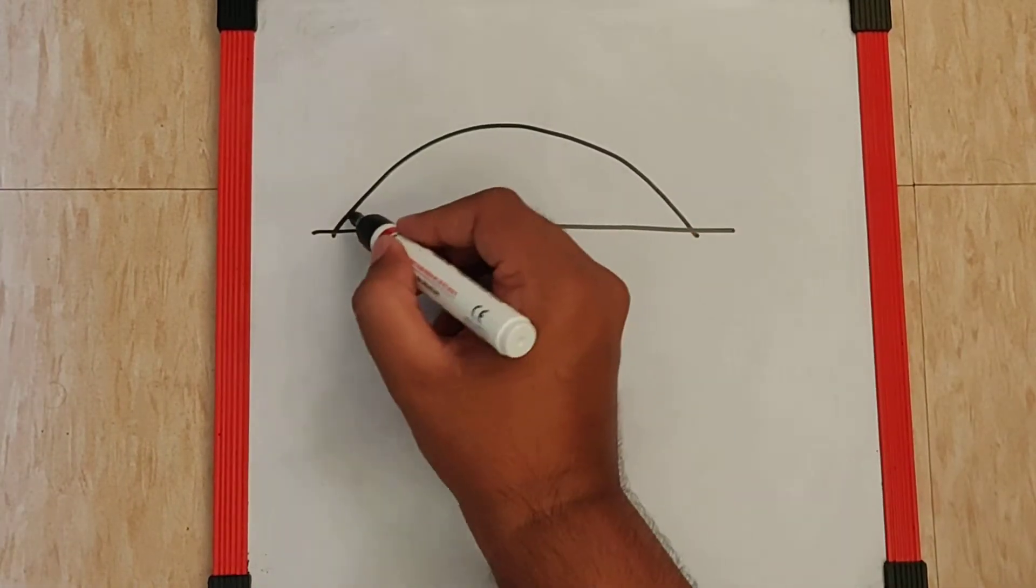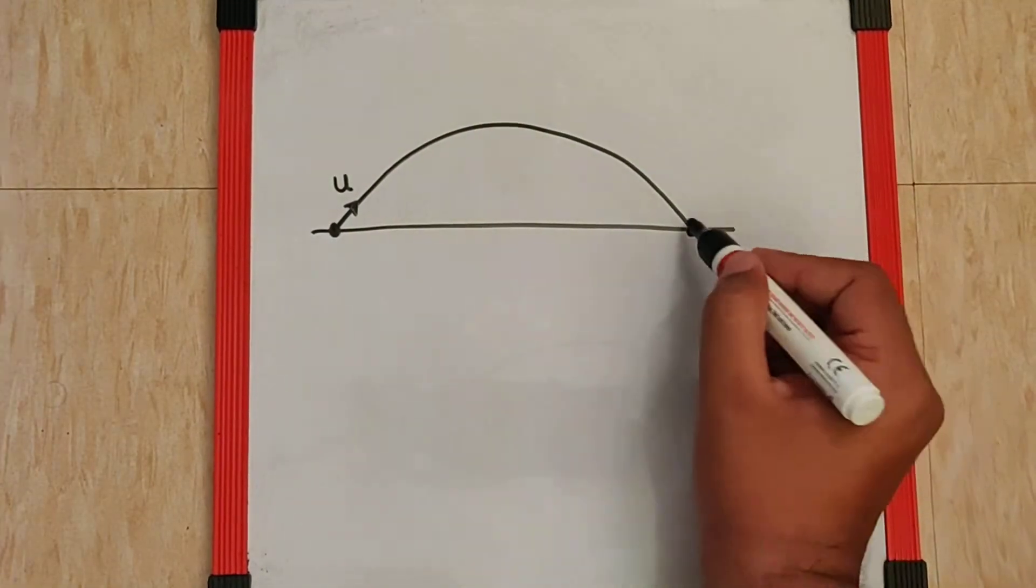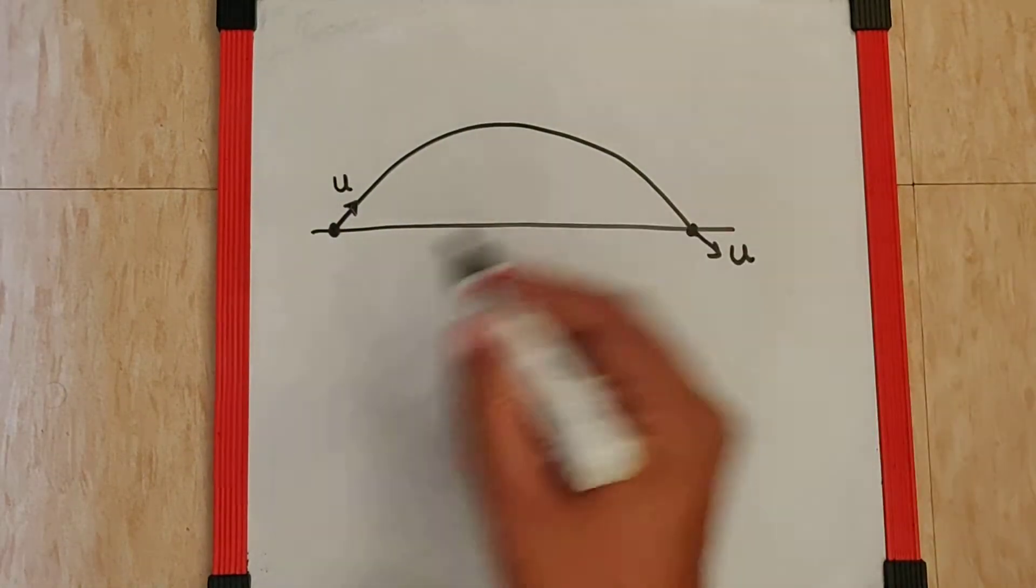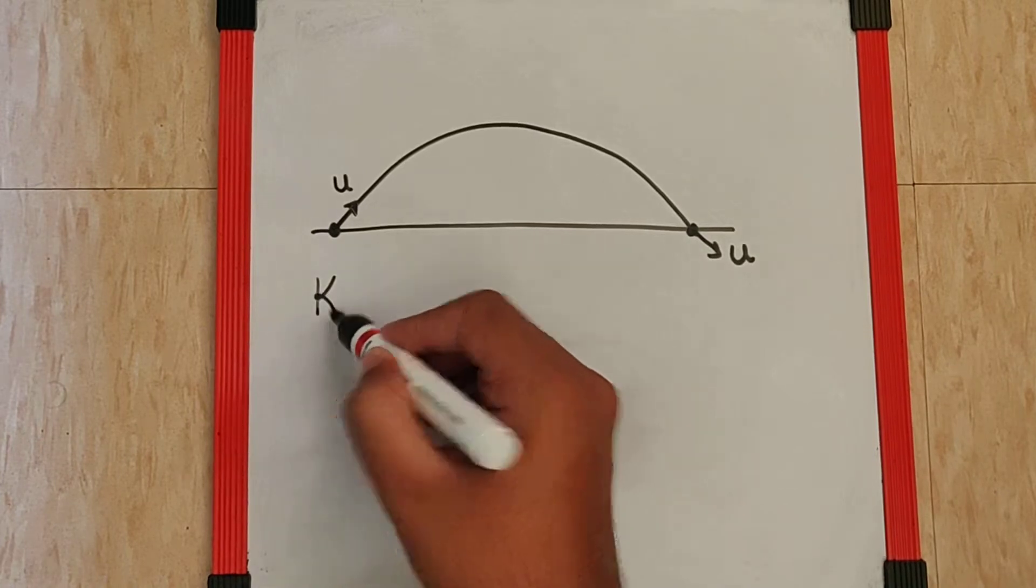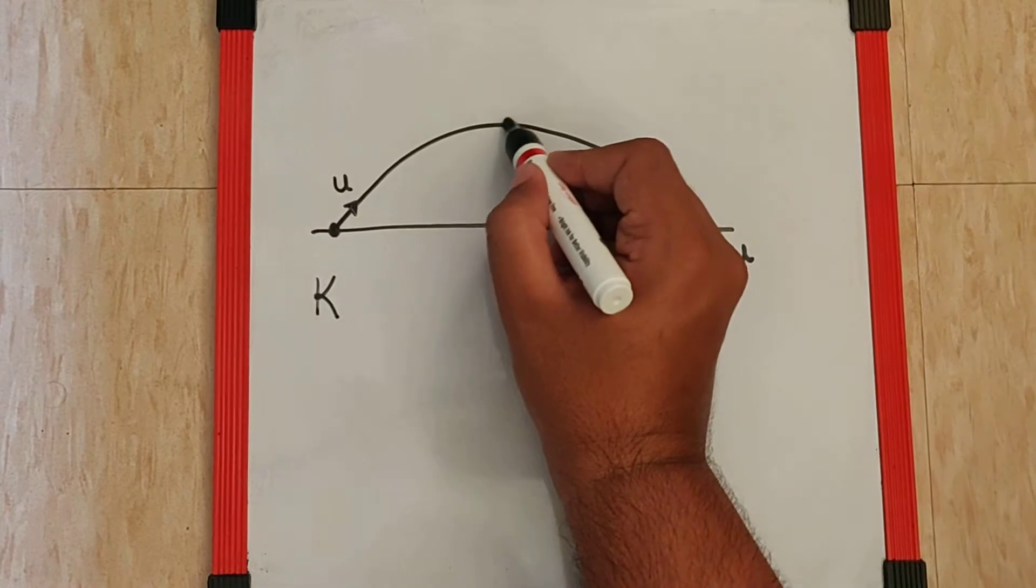path is that the speed at the initial point and the final point remains the same. So the kinetic energy at the start and at the end must be the same. But at the